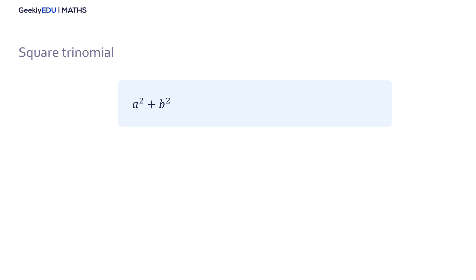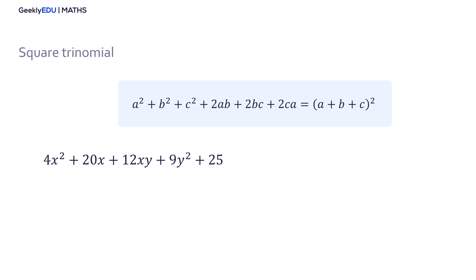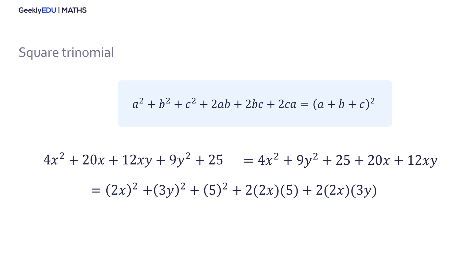The last formula is the square trinomial, which helps us reduce the addition of 6 terms to 3 terms squared. For example, if we have 4x squared plus 20x plus 12xy plus 9y squared plus 25, we can modify it to match the formula. The terms that have squares multiply each other. Using the formula, we factorize with a equal to 2x, b equal to 3y, and c equal to 5. As with the common term method, don't forget that you can use it in many other equations as well.